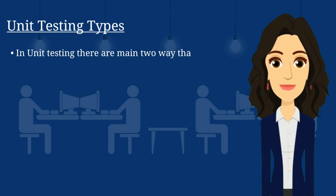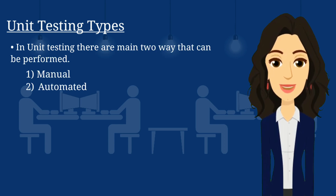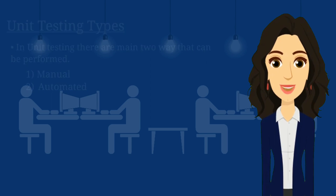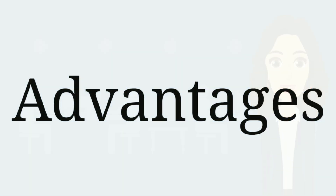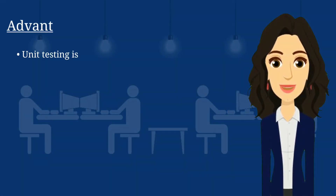Unit Testing Types: In unit testing, there are two main ways that testing can be performed. 1. Manual. 2. Automated.